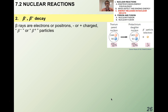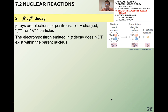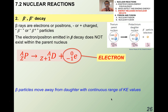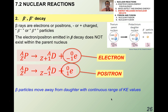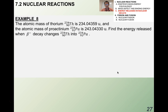What about beta decay? We've talked about beta minus and beta plus — beta particles are electrons or positrons. The beta particle does not exist within the parent nucleus. Beta particles move away from the daughter nucleus with a continuous range of kinetic energy values.